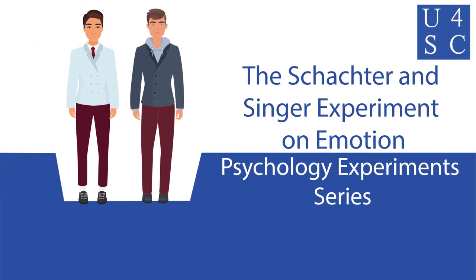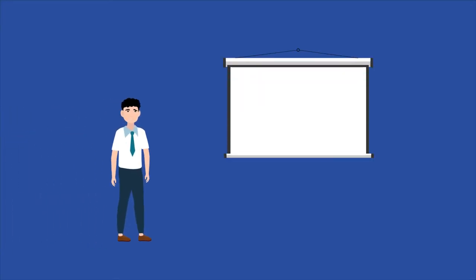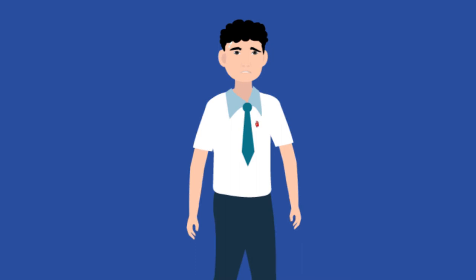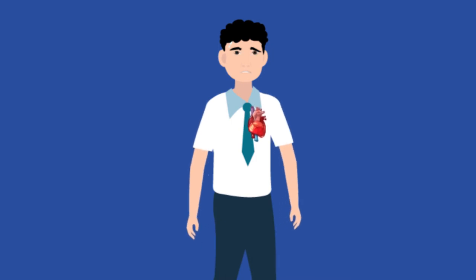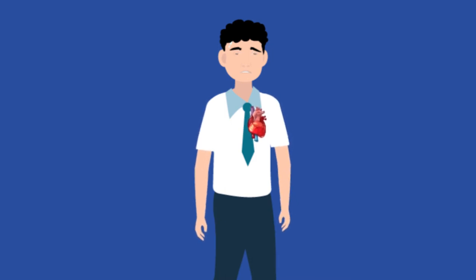Academy for Social Change presents the Schachter and Singer experiment on emotion. You're the first student to give their presentation in Spanish class. It's a fairly long speech and the whole thing has to be in Spanish. Your mouth is dry and your heart thumps too fast, but you finish it.